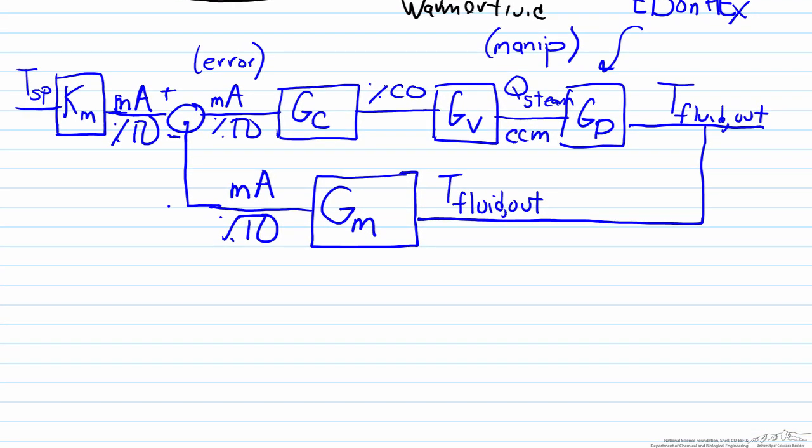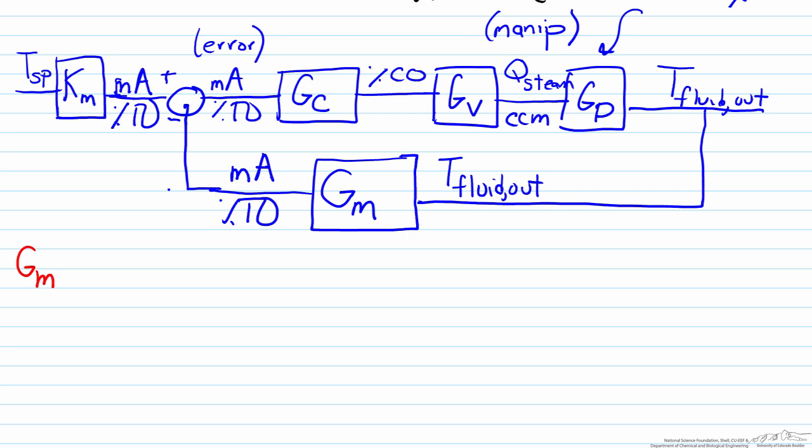We'll start by looking at GM. GM represents the transfer function for the sensor transmitter. Because sensors generally act very quickly this is often times a zeroth order transfer function. In other words it is just a gain, represented here as KM.